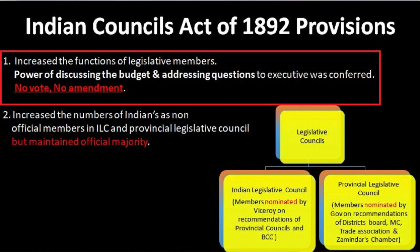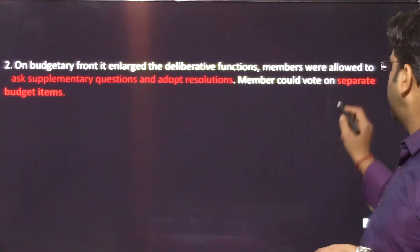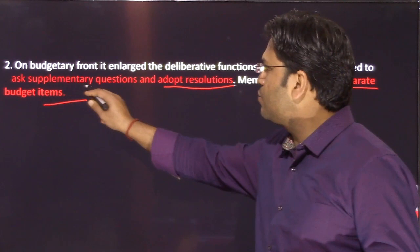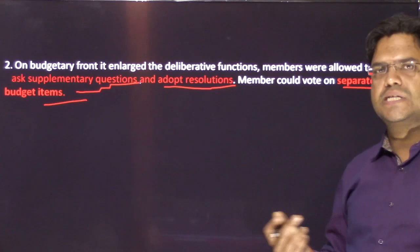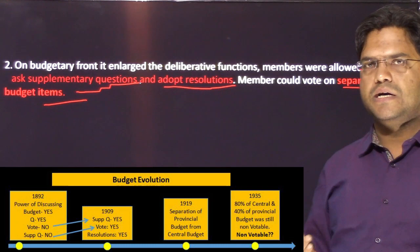The second provision: if you remember, in 1892 two rights had been extended to Indian Legislative Council members on the budgetary front — they could discuss the budget and ask one question to the executive. Supplementary questions, amendments, and moving resolutions were not allowed. Those rights are now being given here. You can vote on separate budget items, move resolutions, and ask supplementary questions. So this is the evolution of the budget rights of the ILC members across these three Acts.